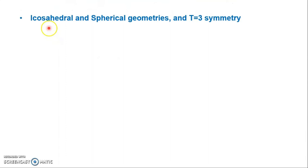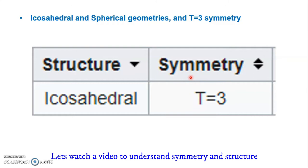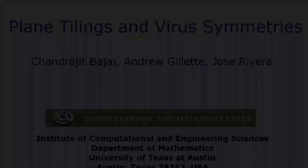Potato Leaf Roll Virus has icosahedral and spherical geometry with a triangulation number T=3. The concept of symmetry and icosahedral geometry is a broad subject, so a short video is shown to explain the coordinate systems and icosahedral structure relevant to understanding PLRV's symmetry.